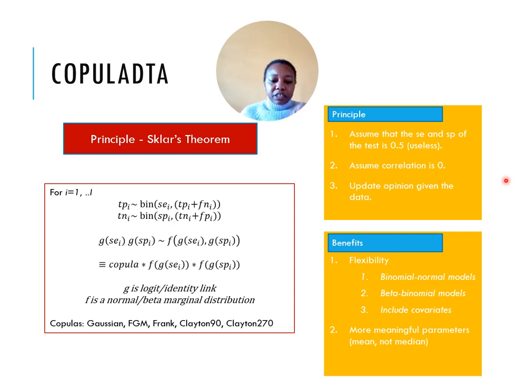For more flexibility, I implemented four copulas: the Gaussian and FGM that we have already seen, there is the Frank, Clayton 90 and the Clayton 270 copulas. They are different in regards to the nature of the between study correlation.